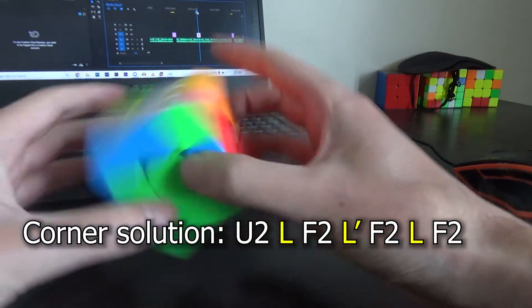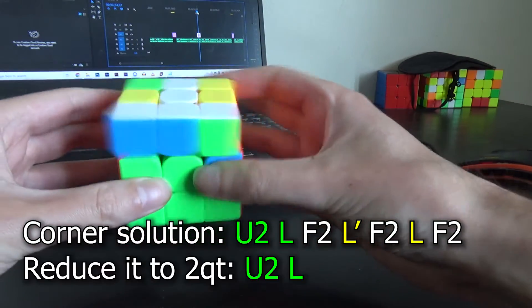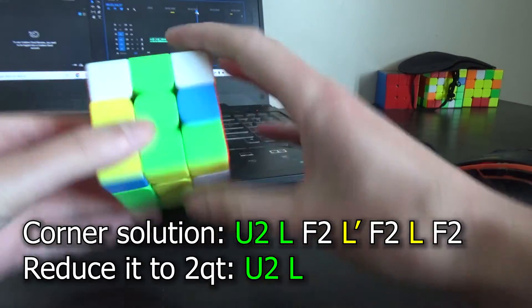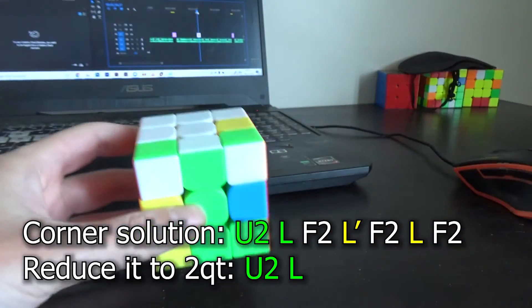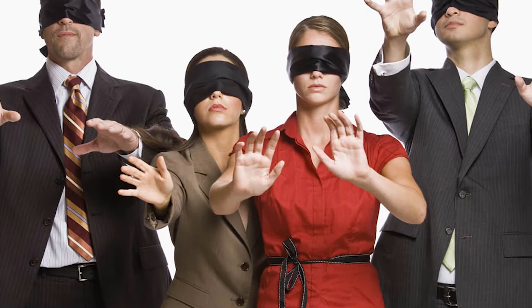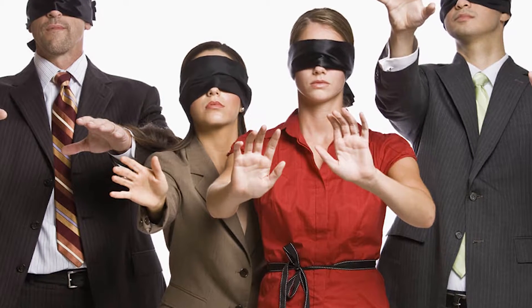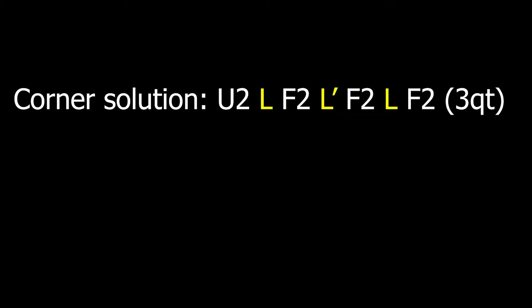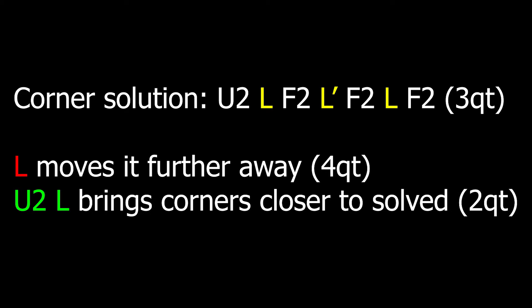For example, if you have three quarter turn corners, you can do one quarter turn to reduce it to 2E4C which is solvable with two quarter turns. But you can't just apply quarter turns randomly and try to get a trigger from that, because for example you might turn that 3 quarter turn into a 4 quarter turn case instead of into a 2 quarter turn case.